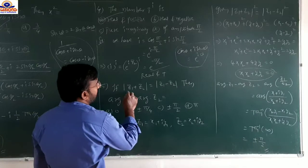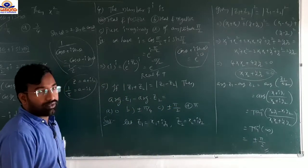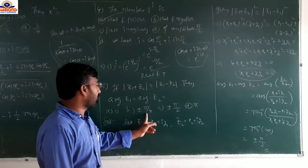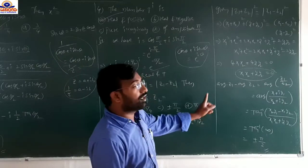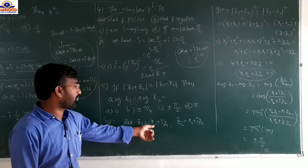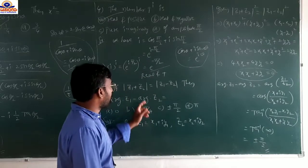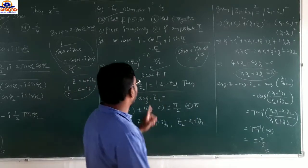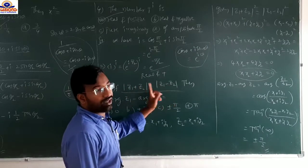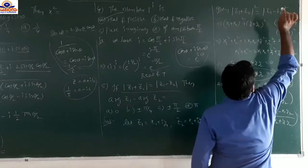If modulus of z₁ plus z₂ equals modulus of z₁ minus z₂, then argument of z₁ minus argument of z₂ equals what? Option a: 0, option b: ±π/4 (π·5/4), option c: ±π/2, option d: π. Suppose z₁ equals x₁ plus iy₁ and z₂ equals x₂ plus iy₂. Substituting into the given condition and squaring both sides: |z₁+z₂|² equals |z₁−z₂|².